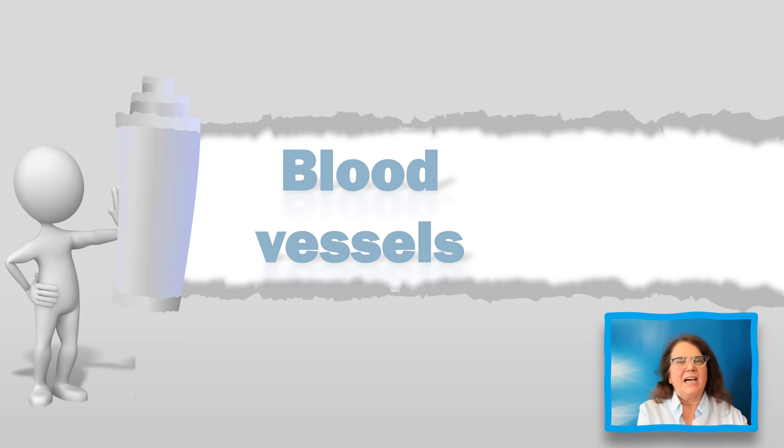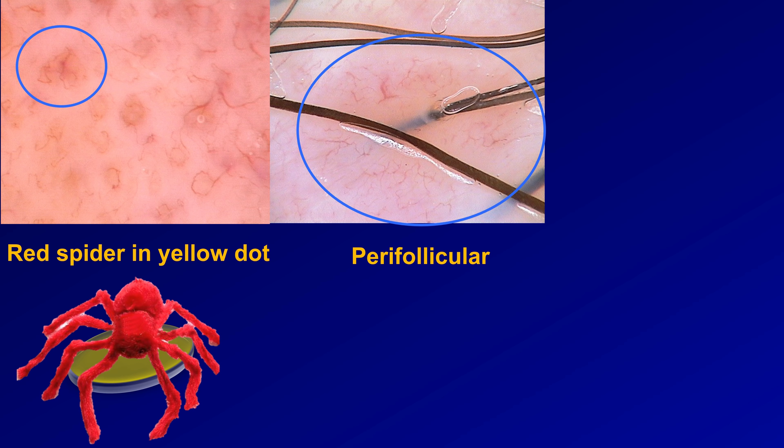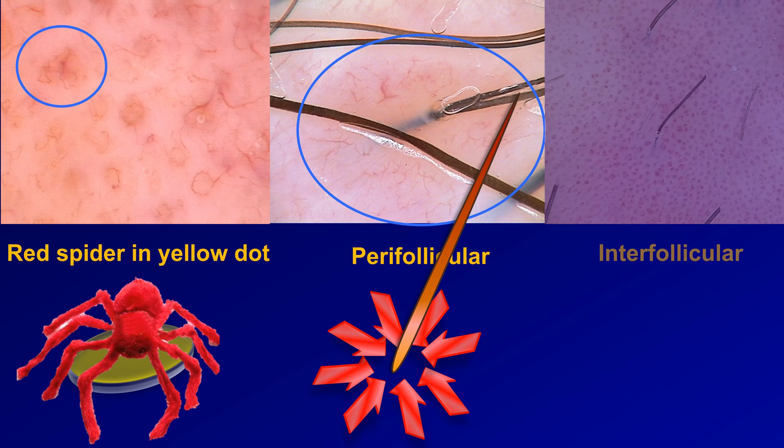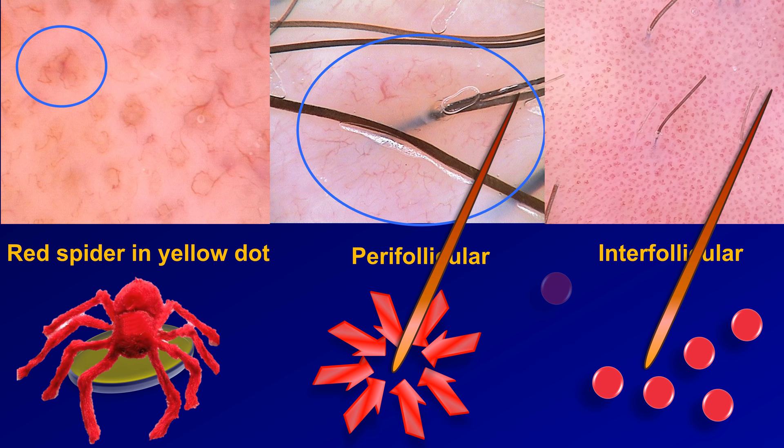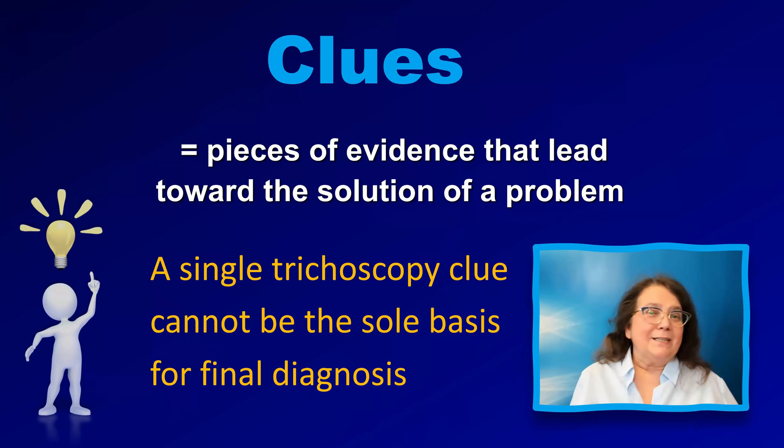Another type of abnormality we often observe is in the blood vessels. This image shows a spider-like arrangement of arborizing vessels superimposed on a yellow dot — we called this the red spider on the yellow dot, a feature associated with the late atrophic phase of discoid lupus erythematosus. Another example is the perifollicular arrangement of elongated blood vessels, seen mainly in cicatricial alopecia. A third example is the intrafollicular arrangement of blood vessels, as shown in this image of psoriasis.